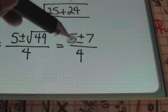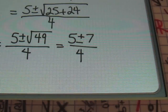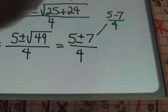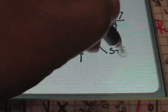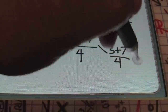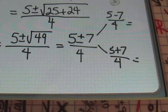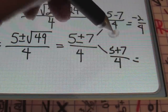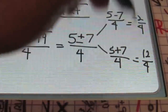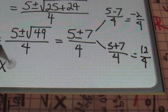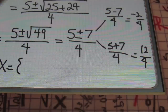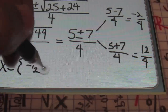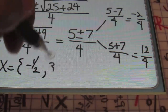Notice the plus or minus symbol — that means two different situations. First: 5 minus 7 divided by 4. Second: 5 plus 7 divided by 4. So 5 minus 7 is negative 2, giving negative 2 fourths. And 5 plus 7 is 12 over 4. These are still not our final answers — we simplify both fractions. Negative 2 fourths simplifies to negative 1 half, and 12 fourths simplifies to 3.